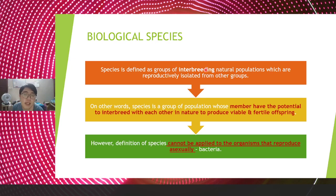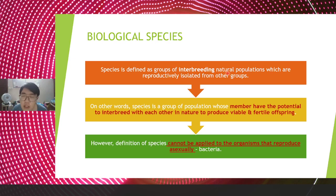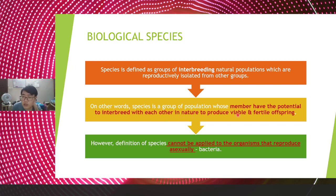The formal definition of biological species is: a species is defined as a group of interbreeding natural populations which are reproductively isolated from other groups. In other words, a species is a group of populations whose members have the potential to interbreed with each other in nature to produce viable and fertile offspring.